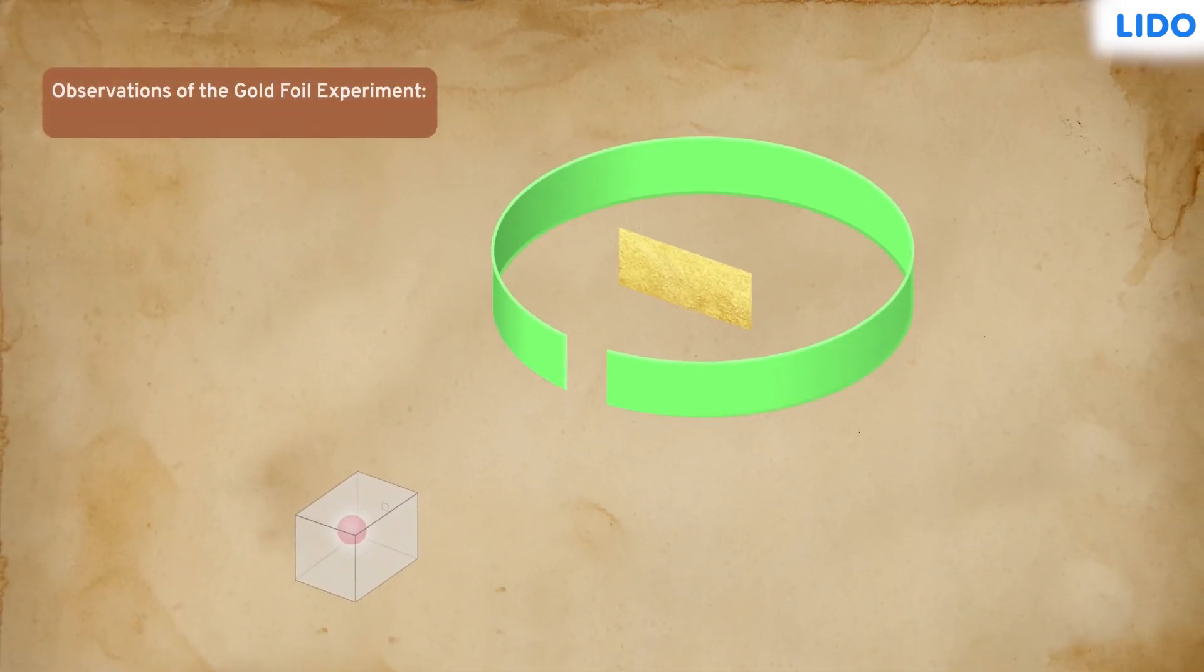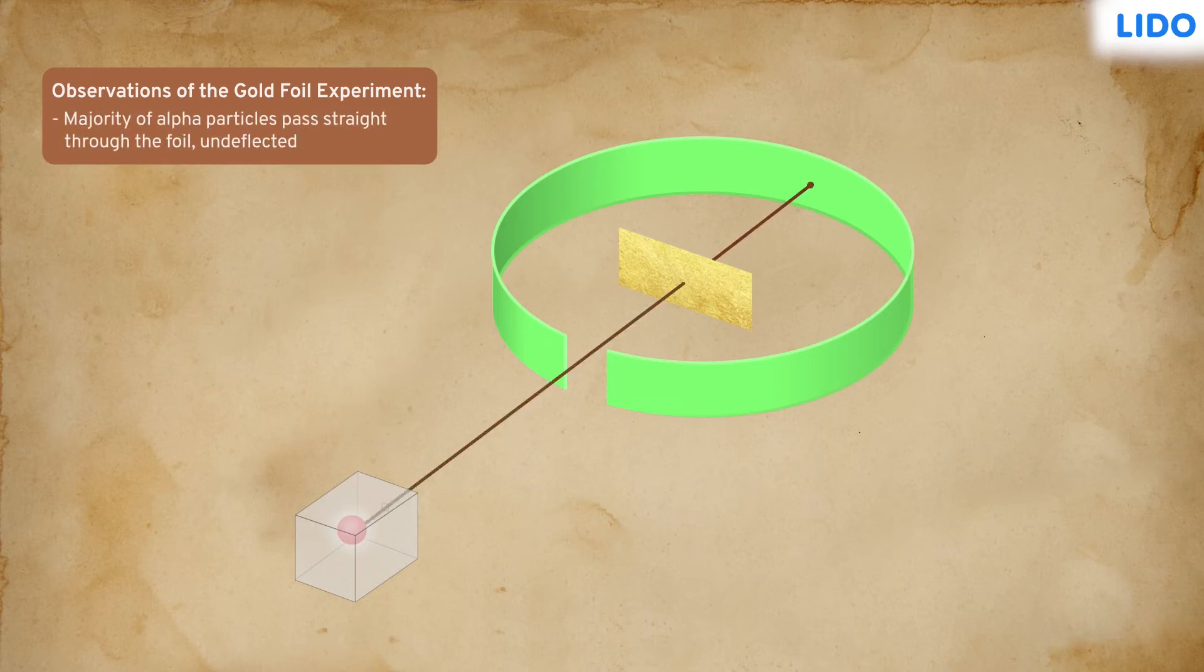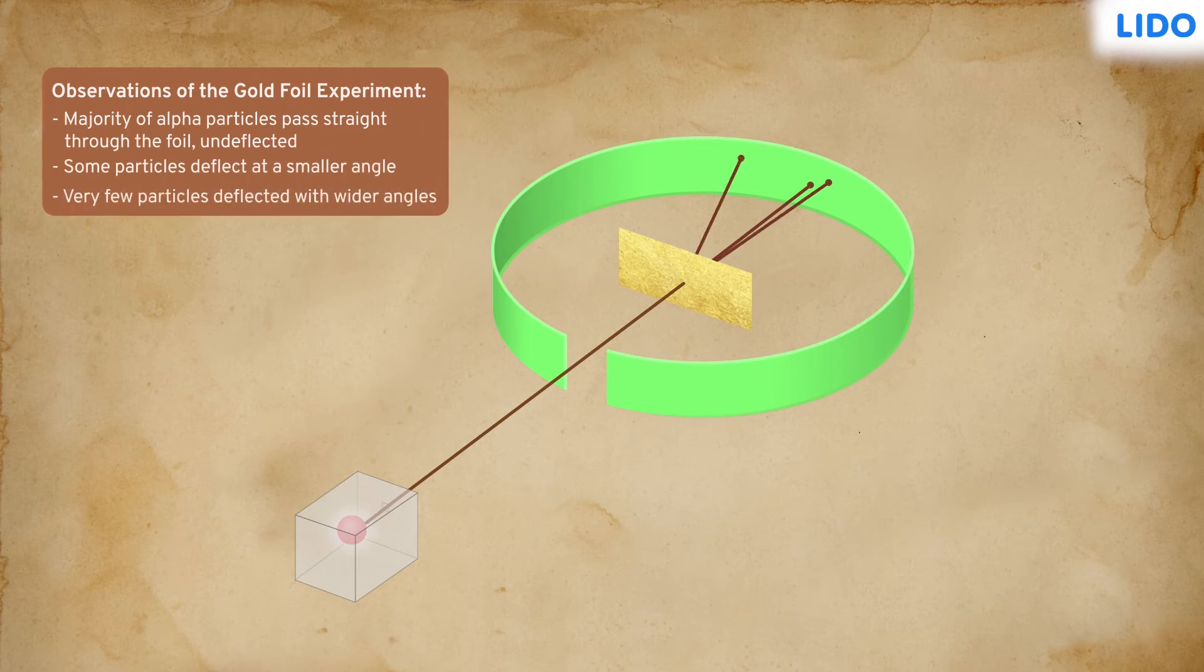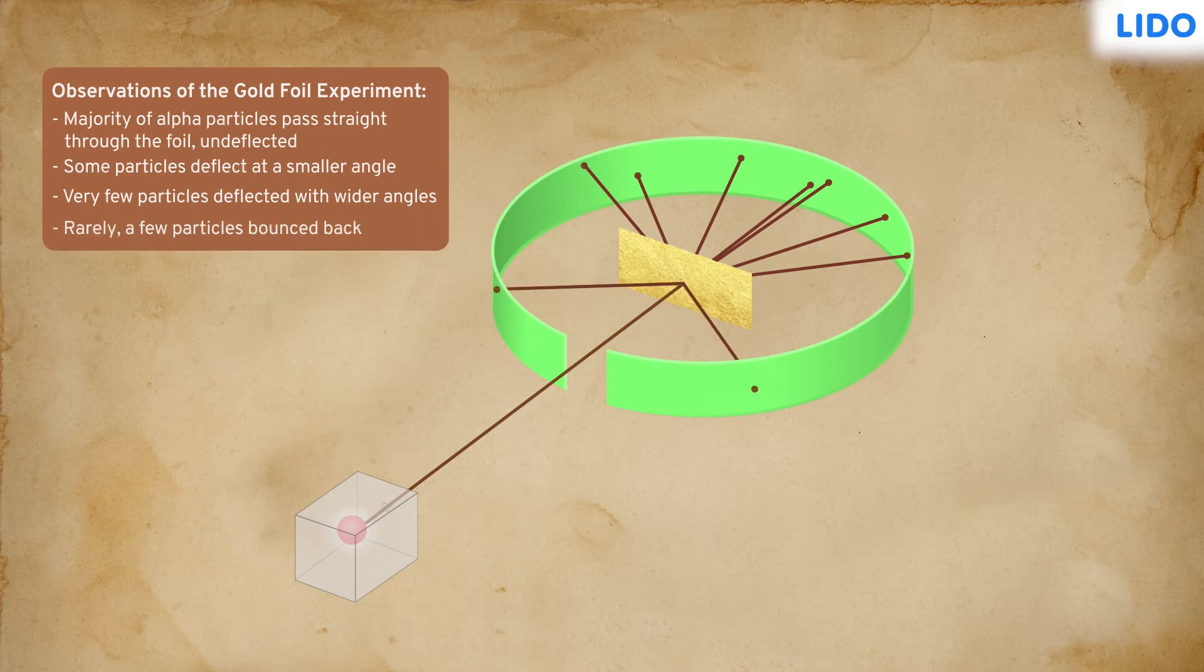It was observed that even though the majority of the particles passed straight through the foil, some particles got deflected at a smaller angle from the straight path. Additionally, there were a few particles that actually deflected at a wider angle from the straight line path. Certain particles even bounced back towards the source of alpha particles.